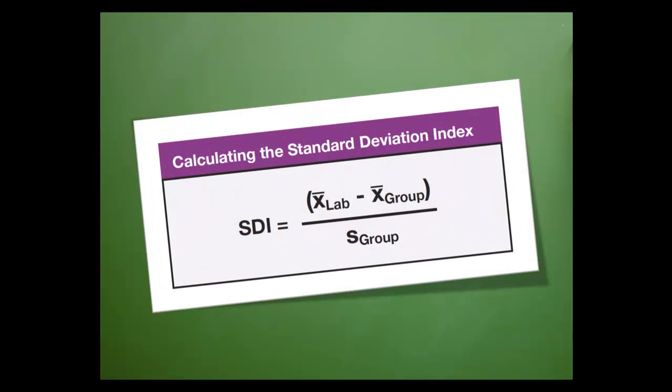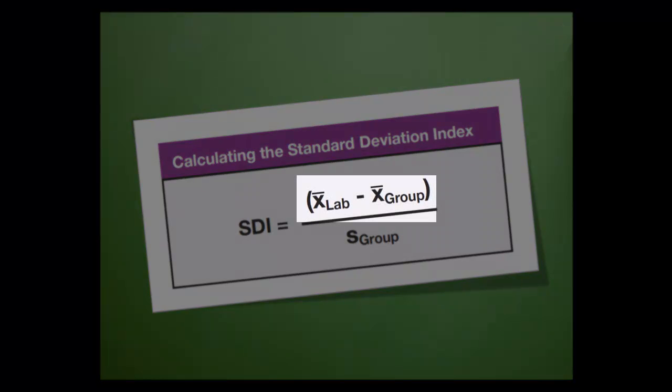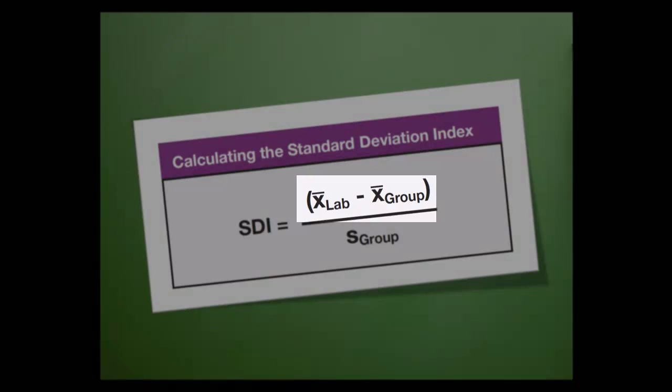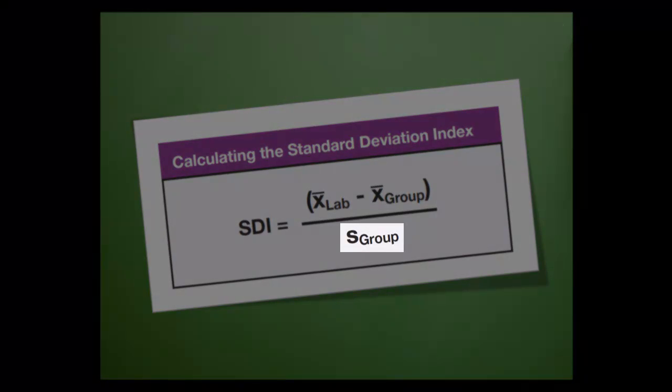This is the formula for SDI. Let's pick it apart so that you can understand it. First, we subtract the peer group mean from the laboratory mean. The difference is then divided by the standard deviation of the peer group.